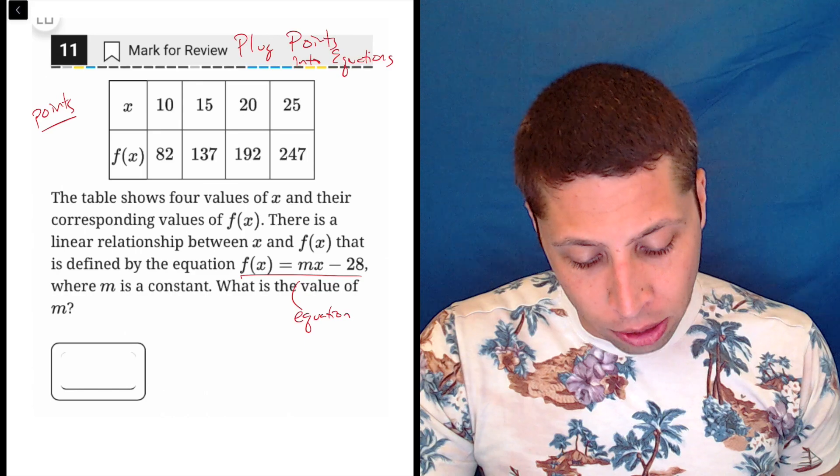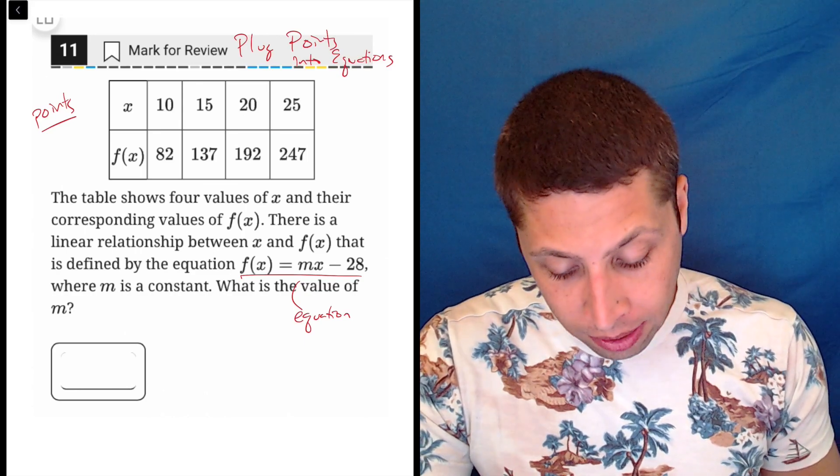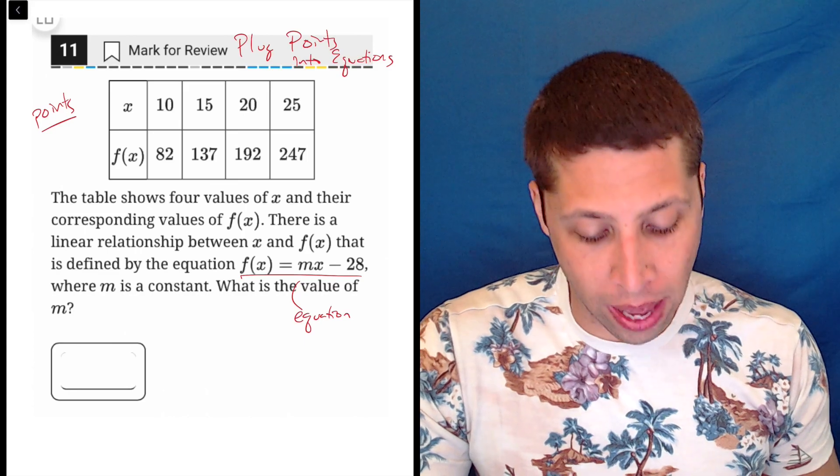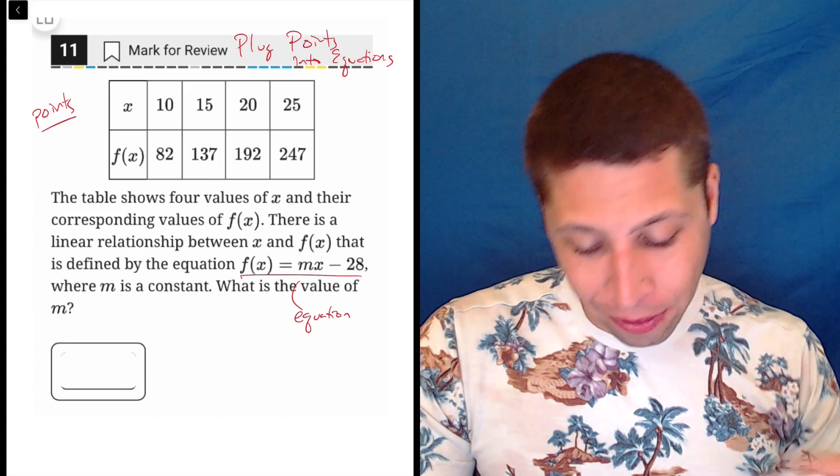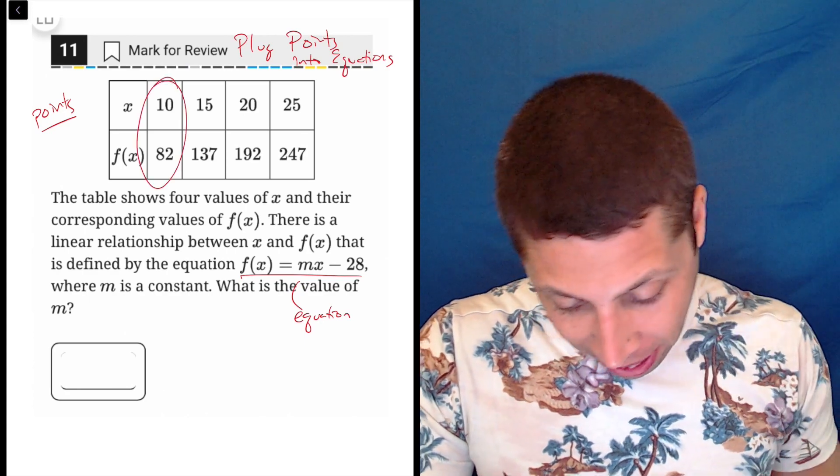It's a linear relationship, so it's defined by this where obviously m is going to be the slope if we know anything about lines, where m is a constant. What is the value of m? So all we're going to do is plug any of these points in and solve for m. So let's just take the easiest one, 10 and 82.